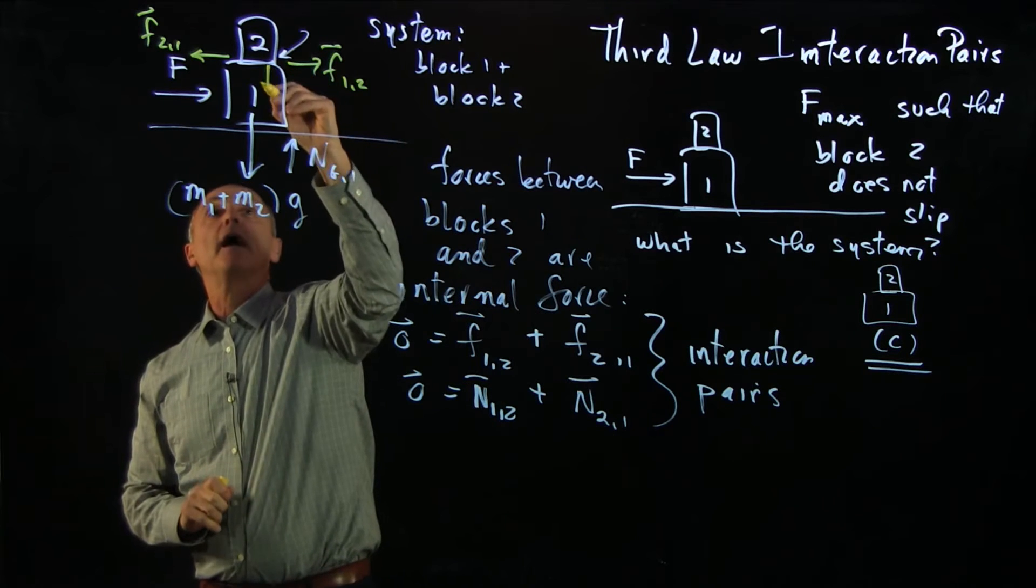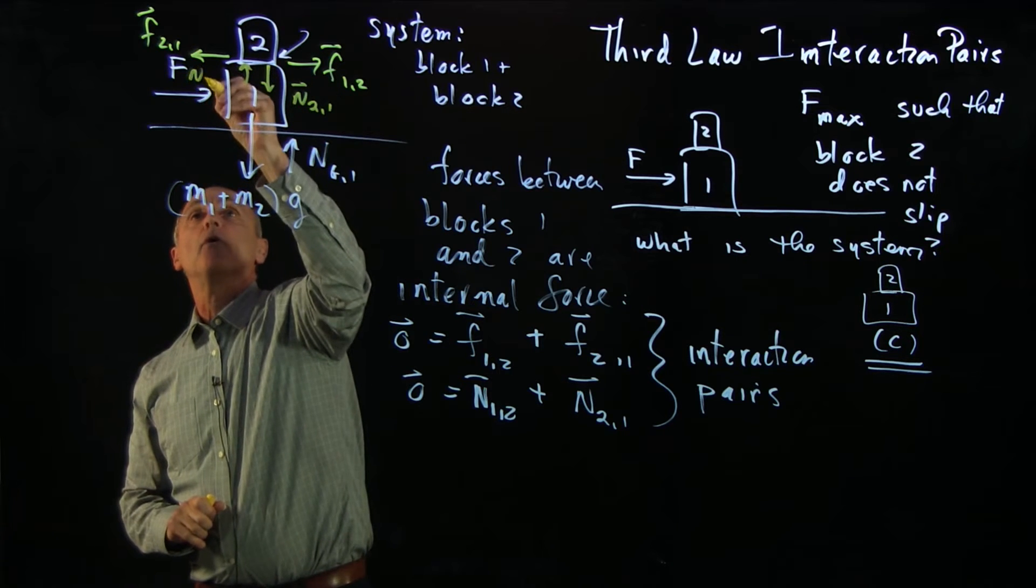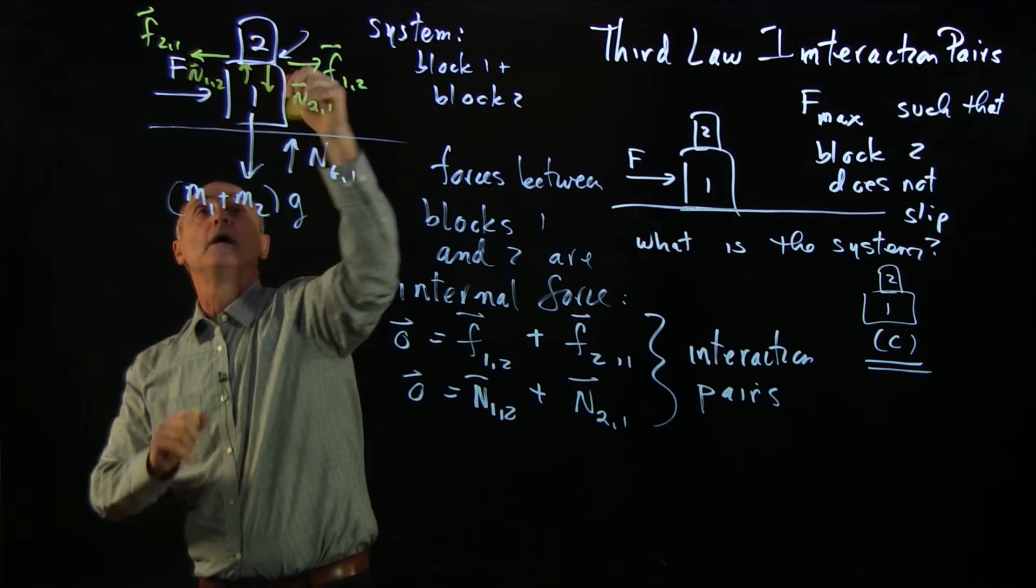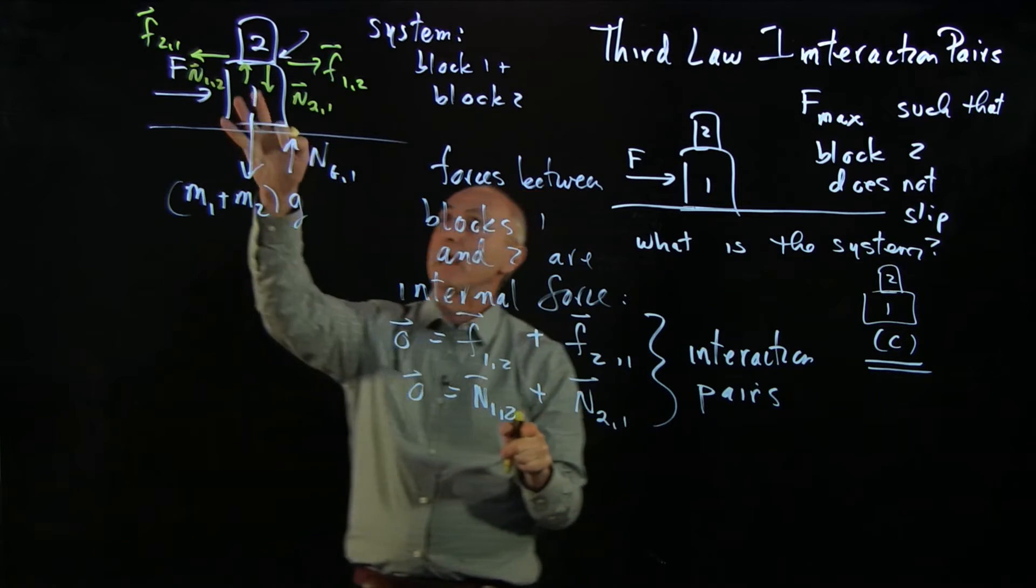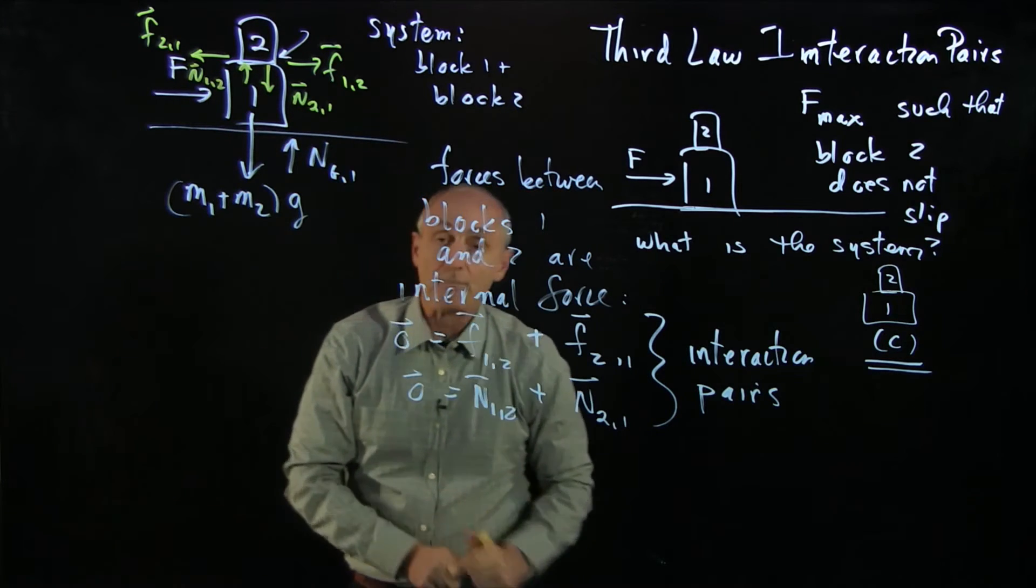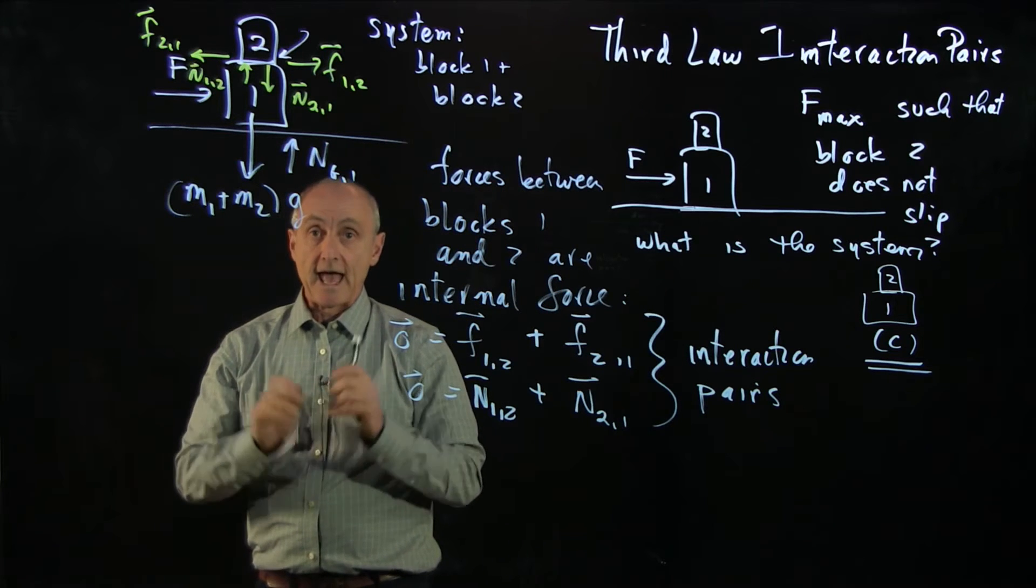I would have the arrow N2,1. And I would have the arrow N1,2. Arrows in opposite directions. The interaction pairs sum to zero because they are internal forces.